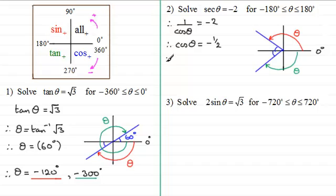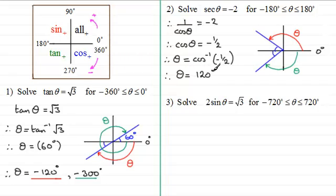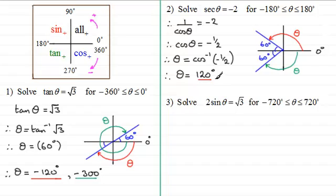Taking the inverse cosine of both sides: theta equals the inverse cosine of minus one half. On the calculator in degrees mode, theta equals 120 degrees — an obtuse angle agreeing with the red angle in the second quadrant. That's one solution. Since 120 degrees minus 60 equals 60 degrees of symmetry, the green angle gives a turn of 120 degrees in the negative sense: minus 120 degrees. So theta equals plus or minus 120 degrees.